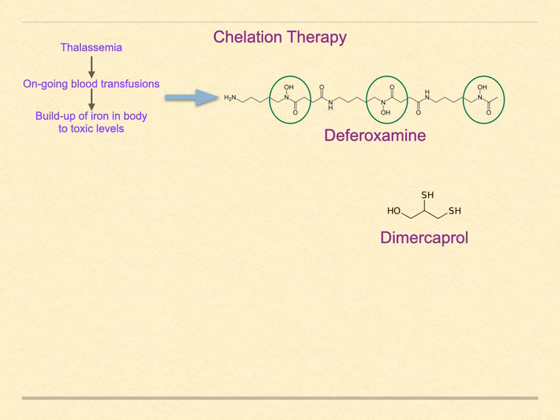Chelation therapy is also used for heavy metal poisoning. Dimercaprol is a tridentate ligand used to treat poisoning by arsenic, mercury, gold, and lead. It was first developed as an antidote for lewisite, an arsenic-based chemical warfare agent developed in World War II.